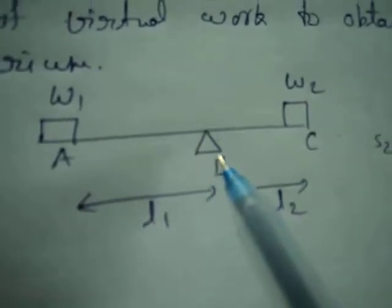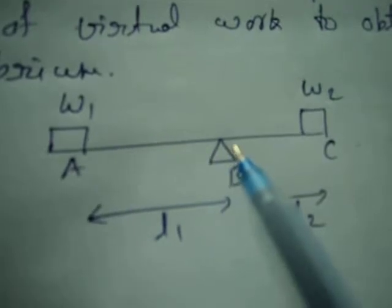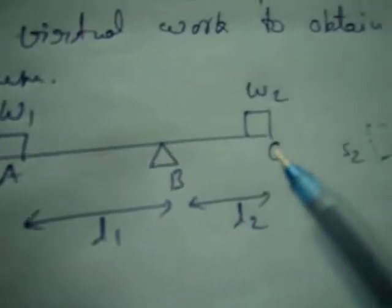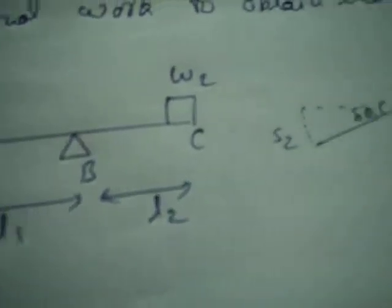These are the two weights W1 and W2 and this is the balance point B. The distance from weight 1 to the balance point is L1 and the distance from weight 2 to the balance point is equal to L2.